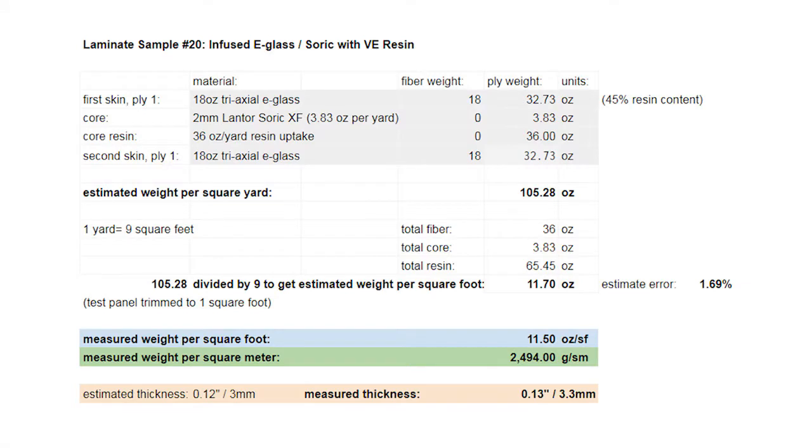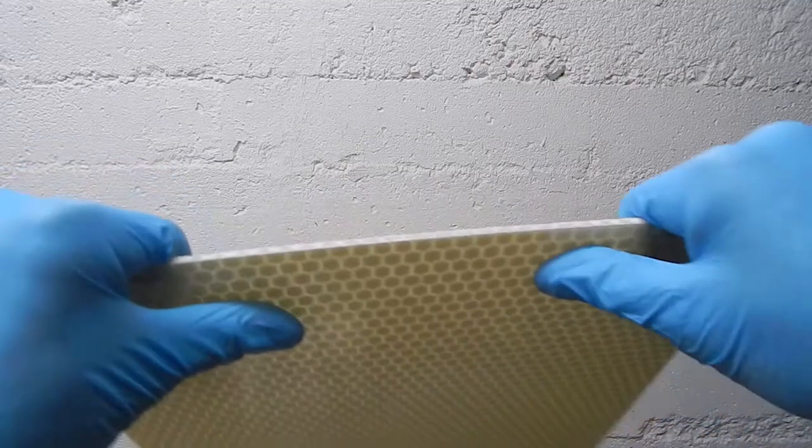It's a pretty basic thing: 18 ounce e-glass on either side of 2mm soric. Most of the resin is in the soric. It's not the lightest core but it's quick and easy to manufacture and it works as the flow media for the infusion.